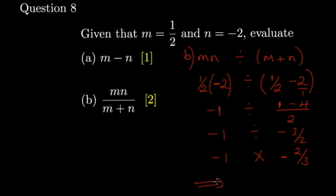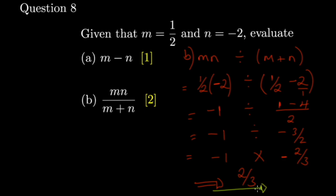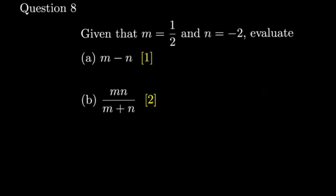Negative times negative gives positive, so one times two over one times three gives two over three. That's it for question eight — you get two over three.